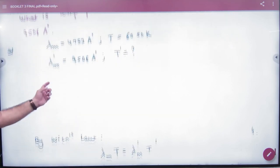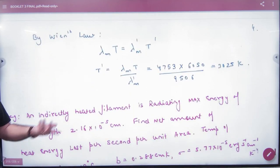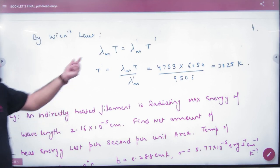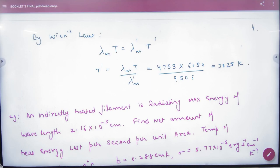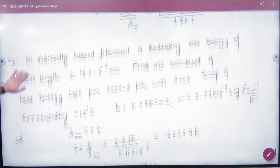Now the wavelength displacement law: lambda into T is a constant. It is star or sun, it will be the same. Here T dash can be calculated. Clear here? Here T dash value will come. Next.